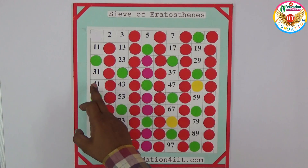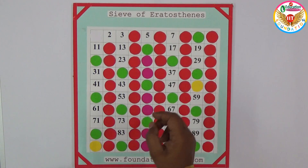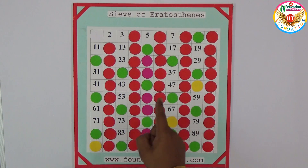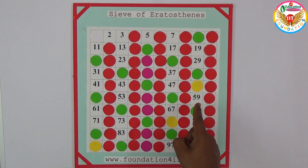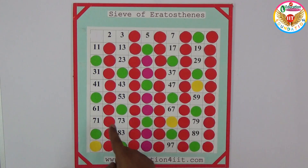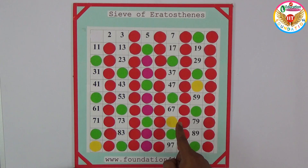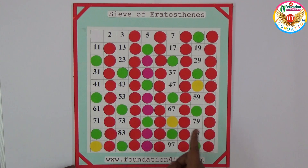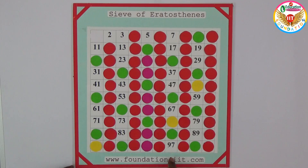Continuing the list of prime numbers: 23, 29, 31, 37, 41, 43, 47, 53, 59, and next: 61, 67, 71, 73, 79, 83, 89, 97.